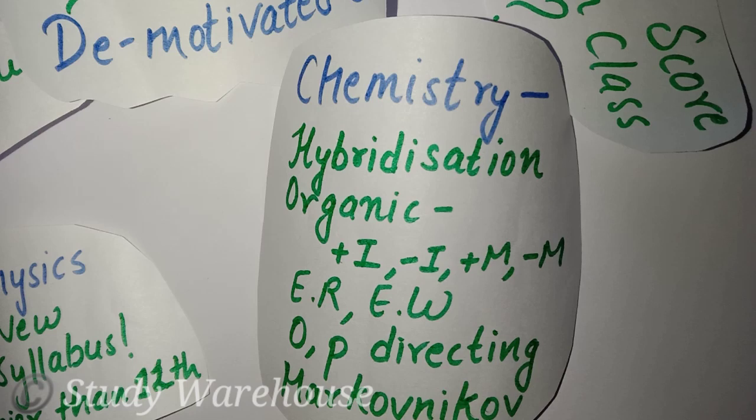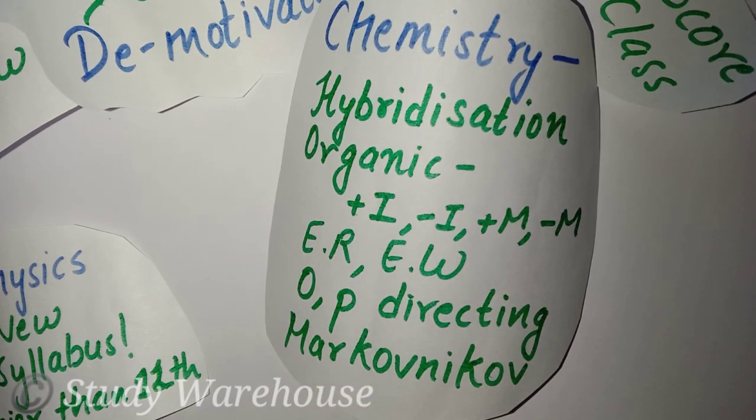Plus I effect, what is minus I, and plus M, which is resonance effect, which is plus R or minus R also. Then ER and EW, which means electron releasing groups and electron withdrawing groups. Then ortho and para directing groups, then there is Markovnikov rule and the opposite of it, the anti-Markovnikov rule. So these are the only topics that you must study for Class 12th. Don't worry if your Class 11th is wasted.